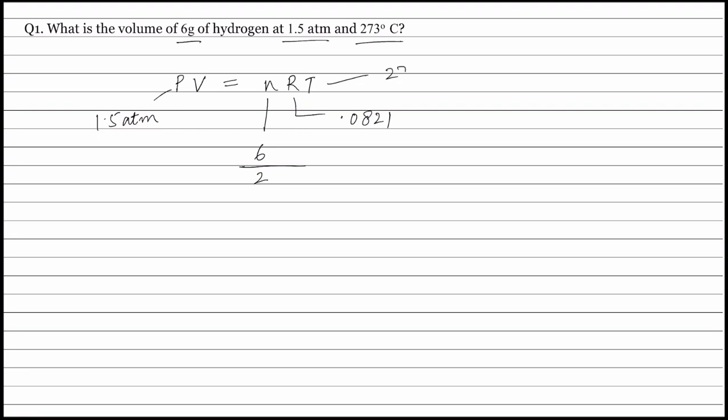Temperature is given in 273 degree centigrade. This has to be converted into Kelvin, and to convert it into Kelvin we will add 273 and we will get the temperature as 546 Kelvin.